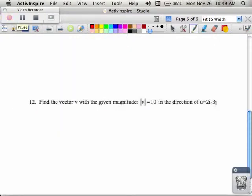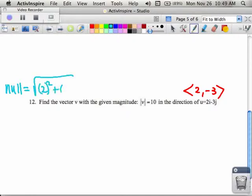If I name the vector u in its component form, it would be 2, negative 3. And then what I could do is I could find its magnitude. So if I find the magnitude of that vector, the magnitude of u would be the square root of 2 squared plus negative 3 squared, or in other words, the square root of 4 plus 9, which is the square root of 13.